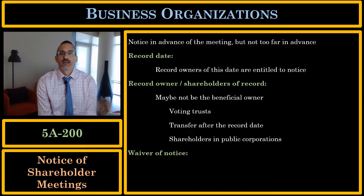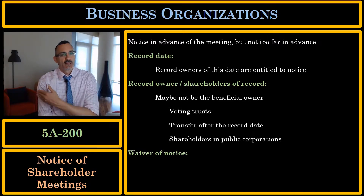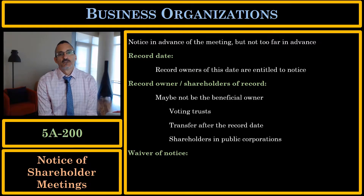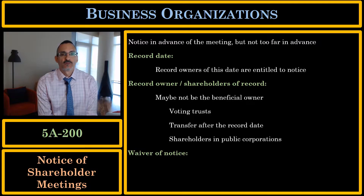First, in a voting trust. In a voting trust, I actually transfer my shares to a trustee, and several other shareholders do the same. The trustee then votes those shares according to the trust agreement. The trustee will be the actual shareholder of record on the corporation's books.